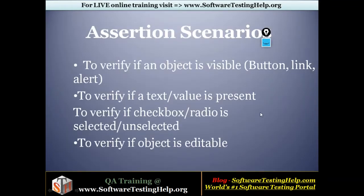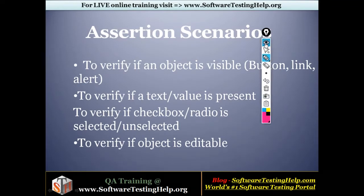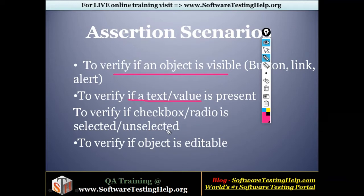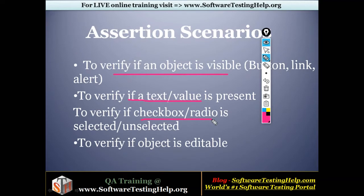I'm Sharmila and in this video I'm here to share a few examples of using assertions in a real-time automation project. I've summarized the test case assertion scenarios we'll be discussing: how to verify if an object is visible on a web page, verify if a text or value is present, verify whether a checkbox or radio button is selected or not, and verify if a particular object is editable.